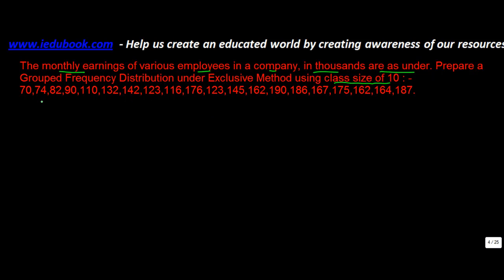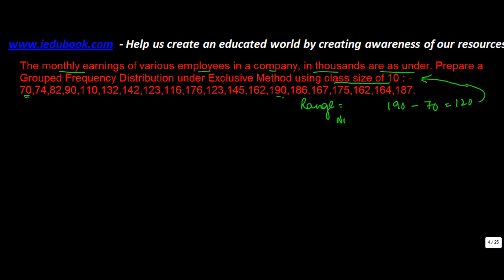To find how many classes to form, we look at the minimum value, which is 70. The range is the highest minus the lowest — 190 minus 70 equals 120. The class size is 10, so the number of classes is 120 divided by 10, which equals 12. So we need 12 classes in total.